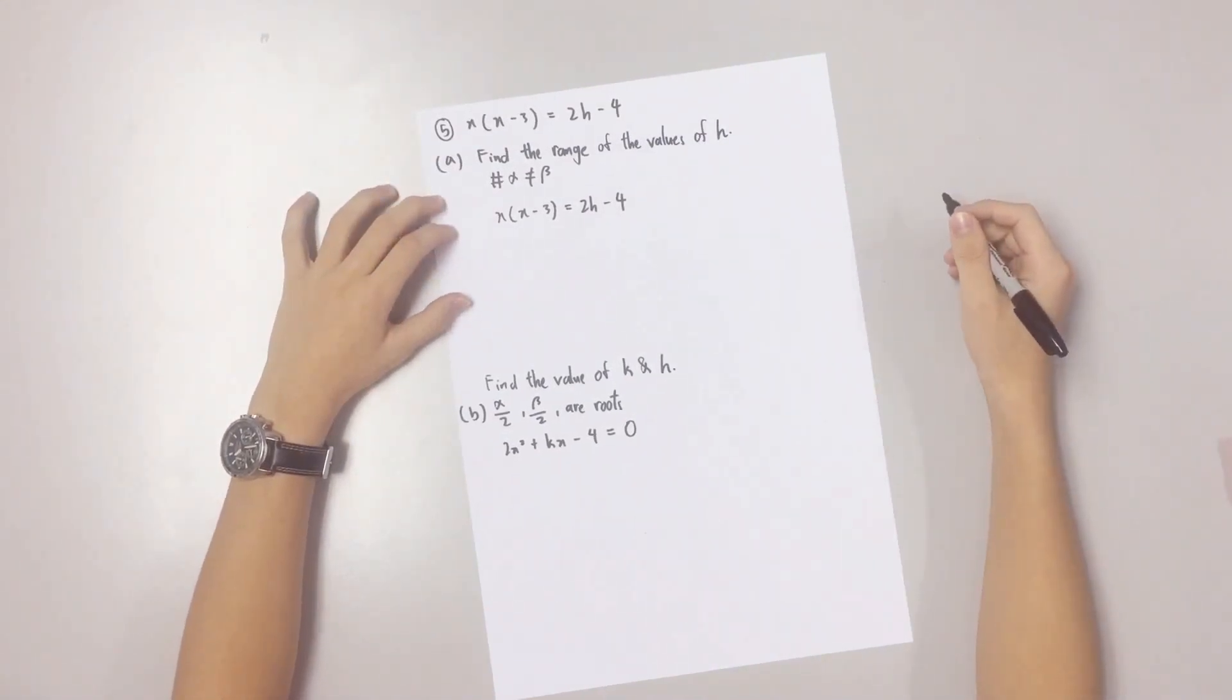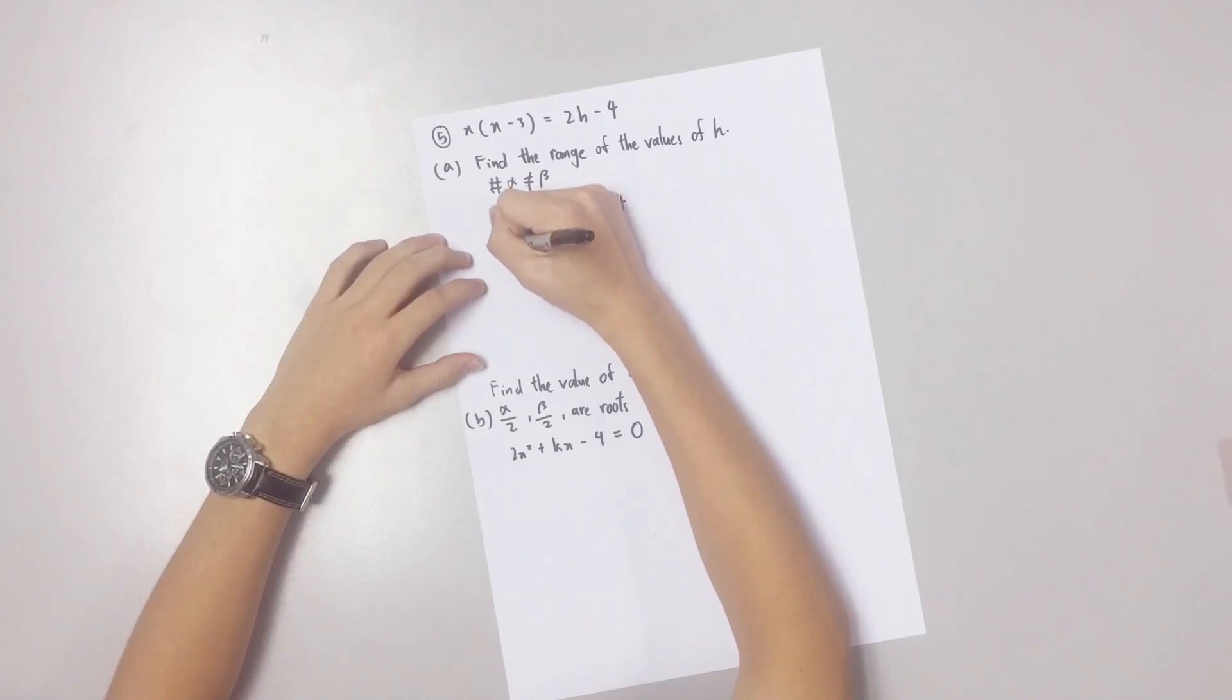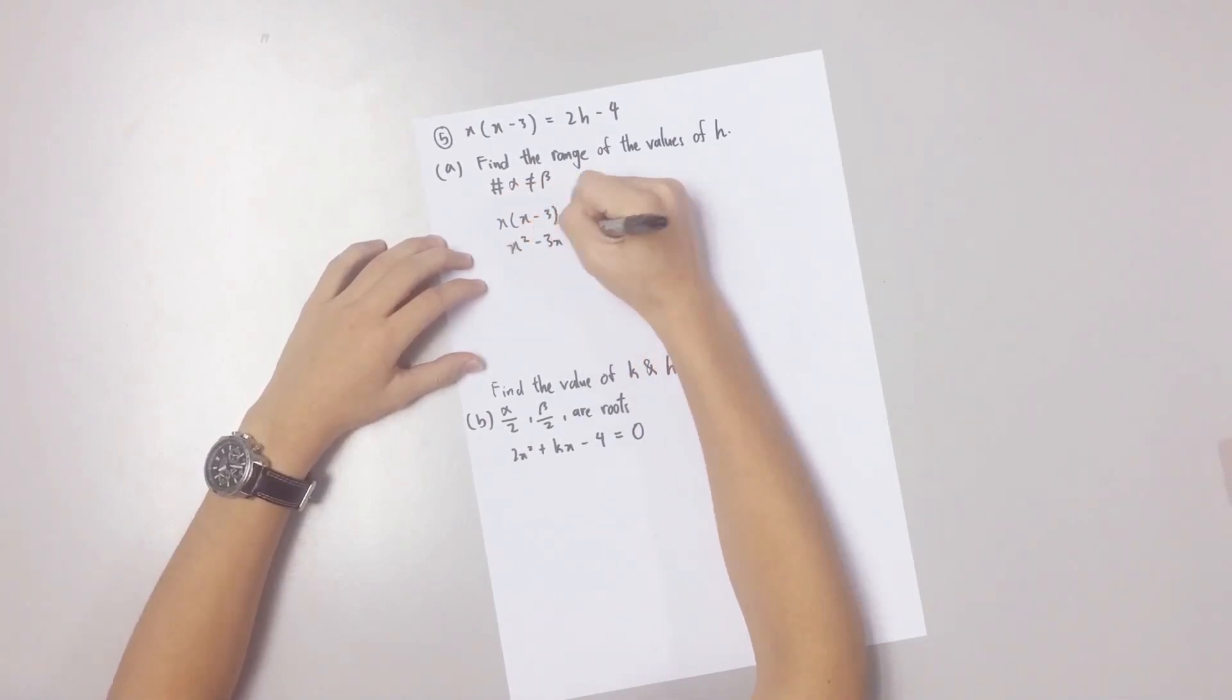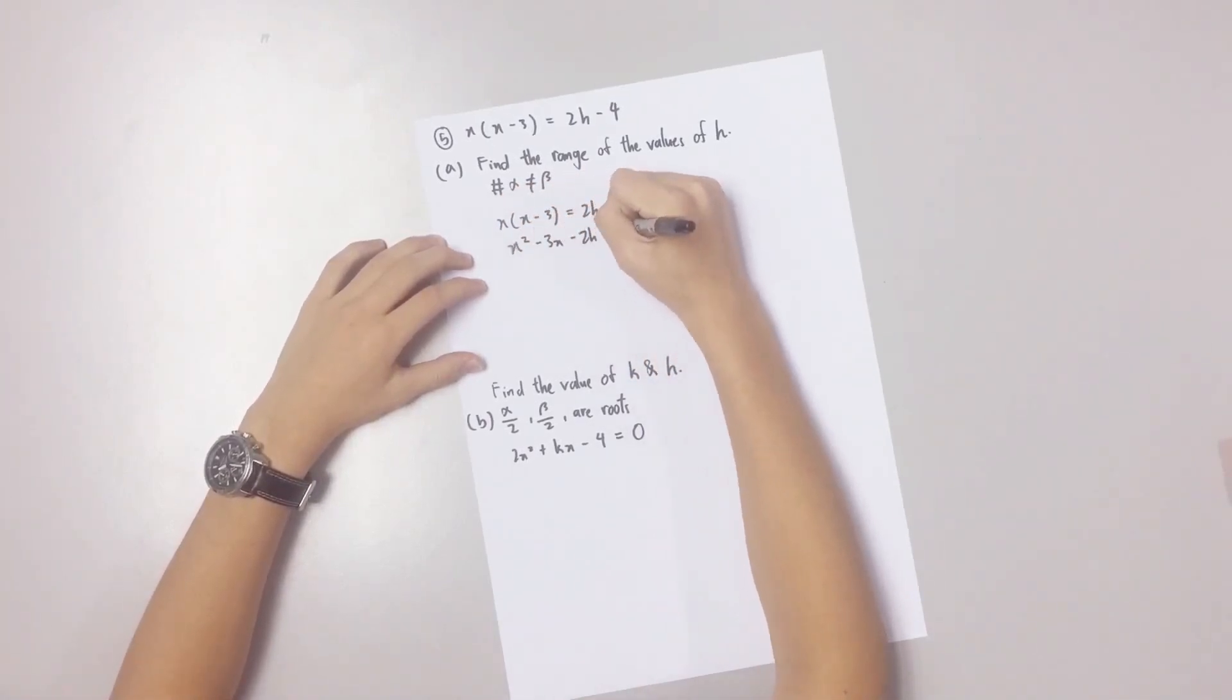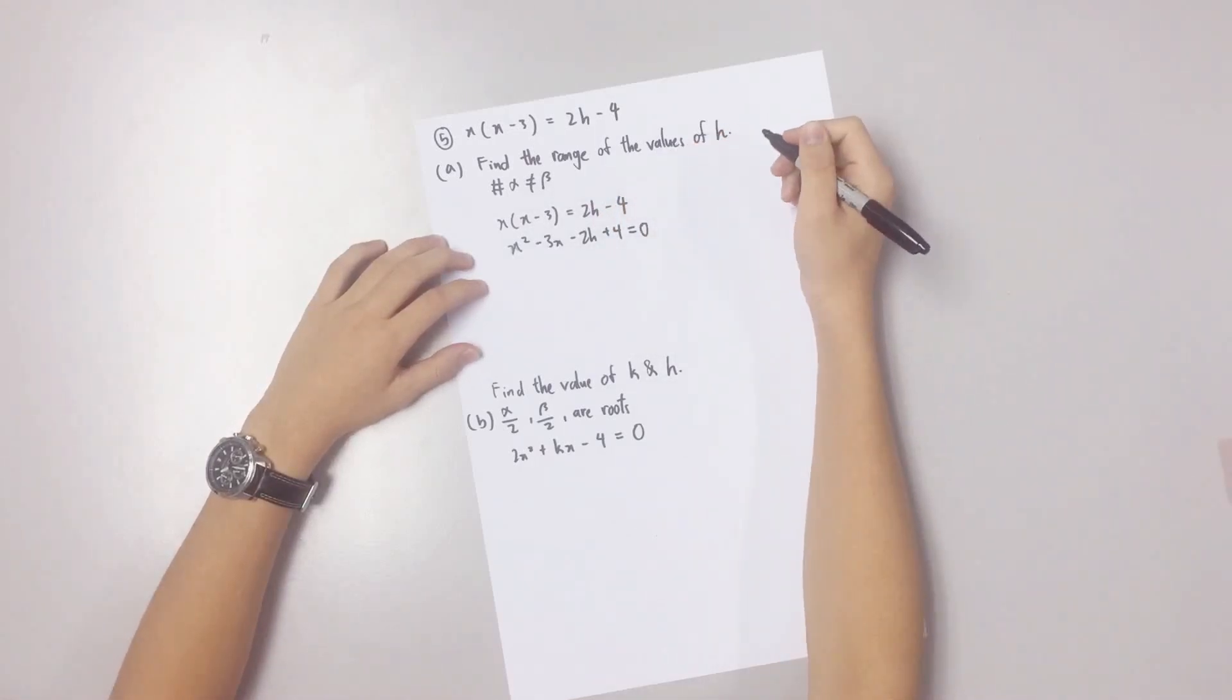Part A: Find the range of the values of H. First, you simplify the equation to a general form. Now, you categorize it to A, B and C.